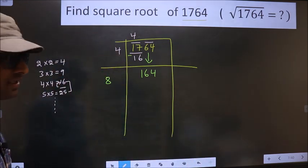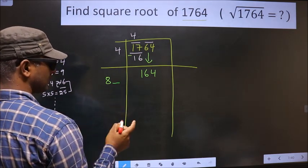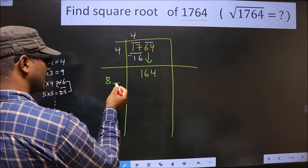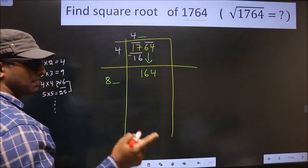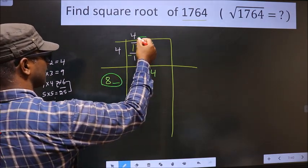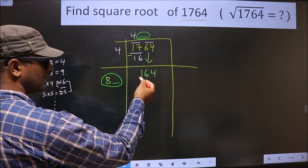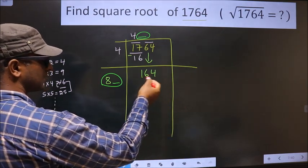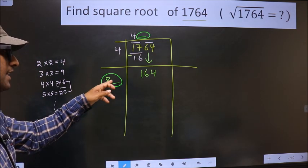Now, here you should write a number. Condition is whatever number you write here, here also you should take the same number. And also, when you multiply this number and this number, the result should be equal to this or closer to this. Now, let us find this number.